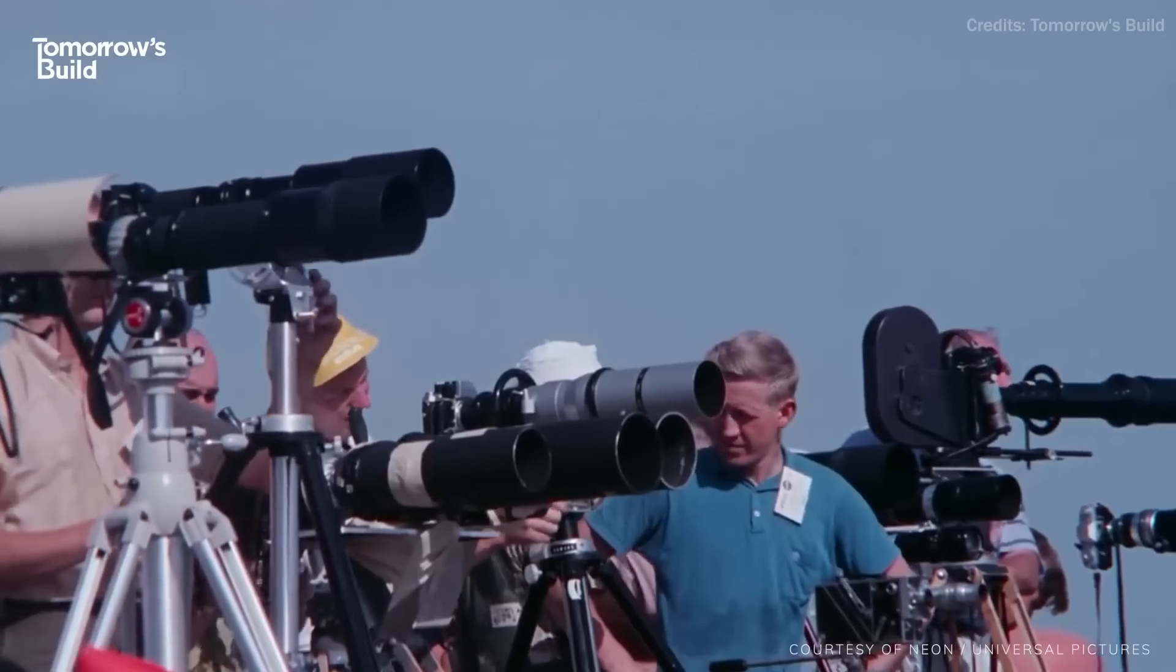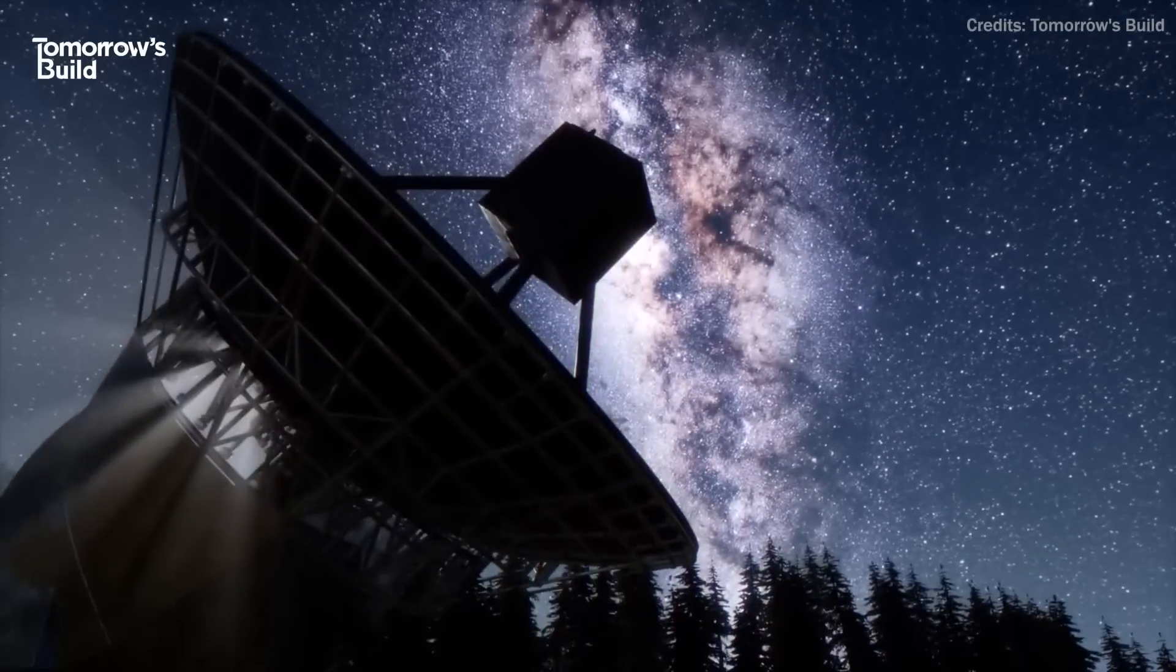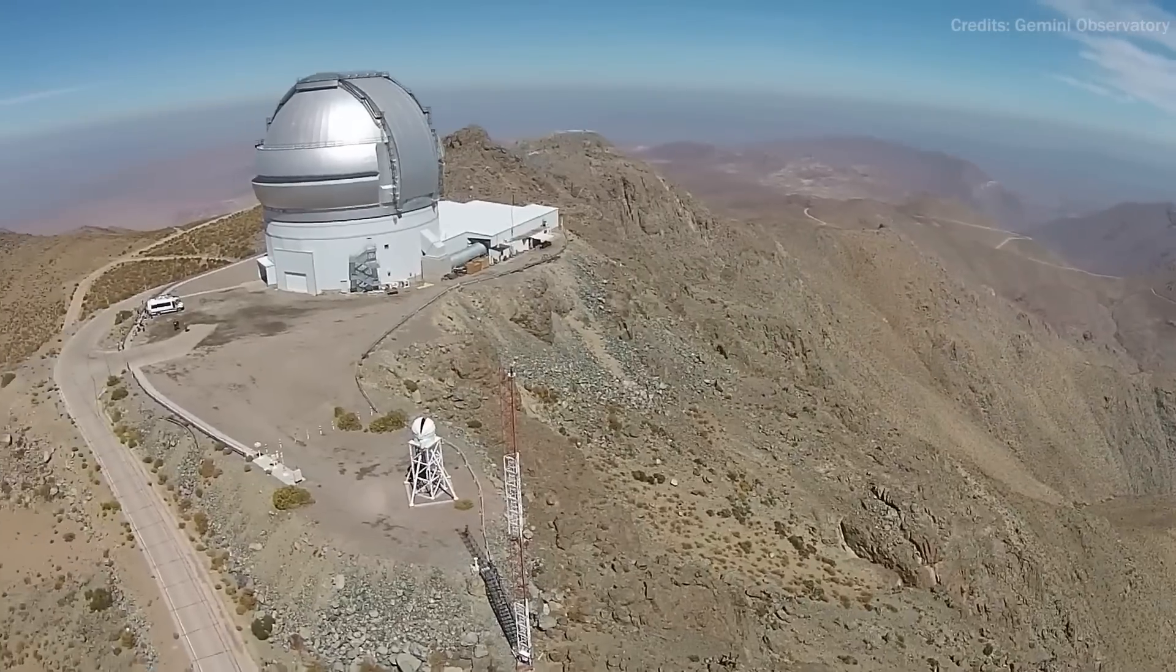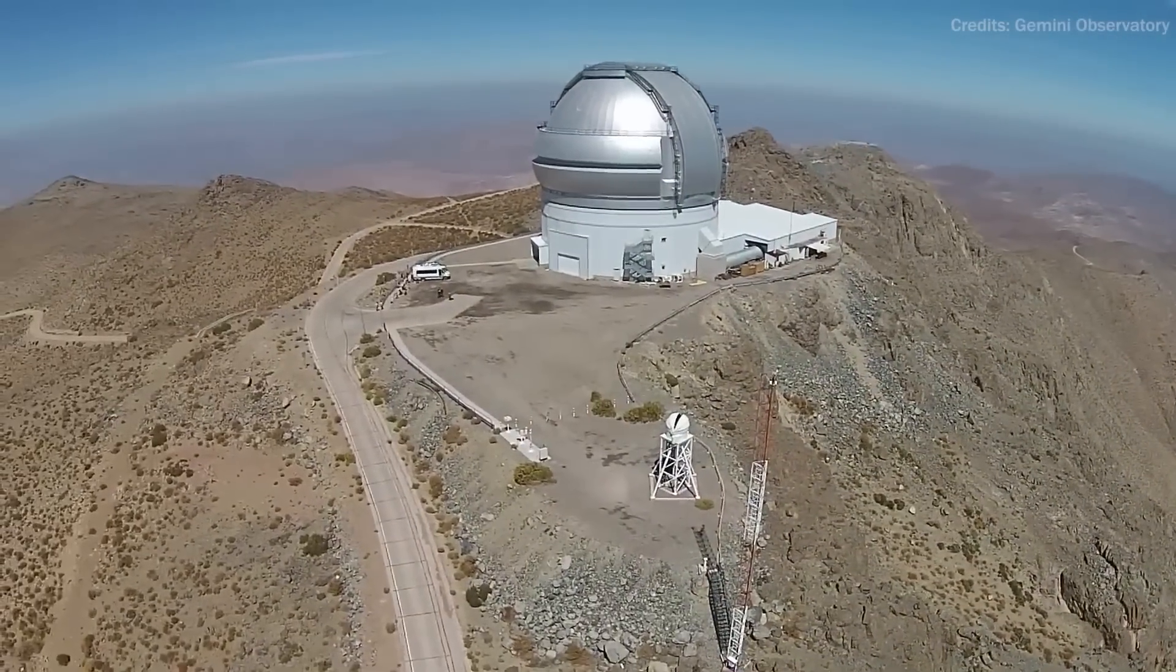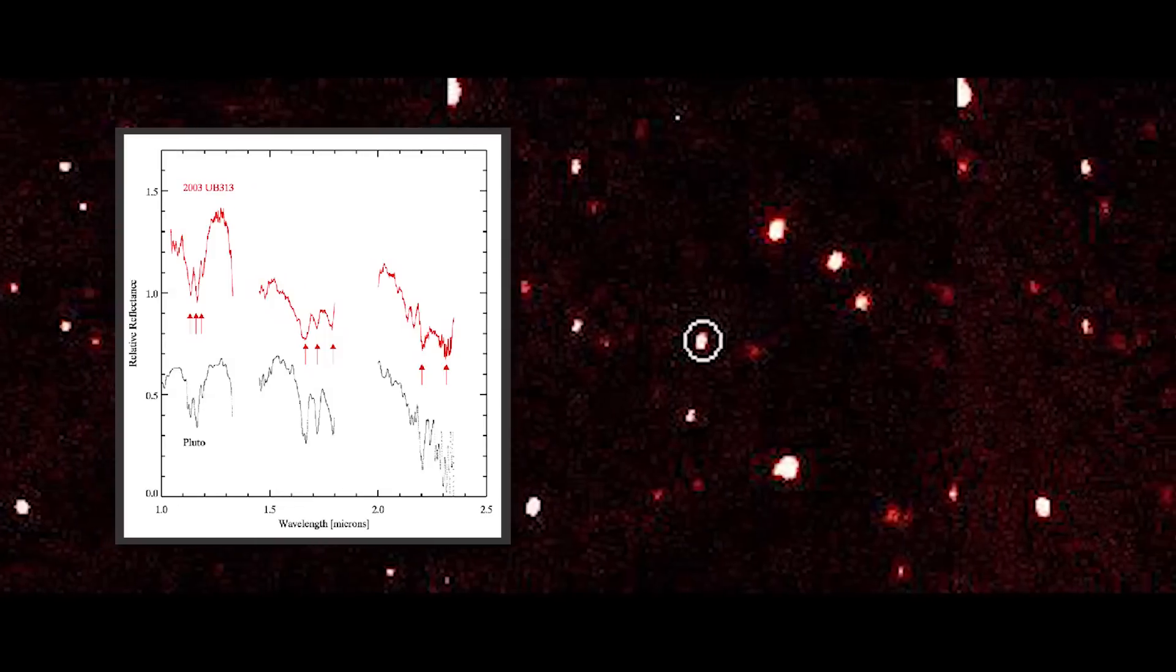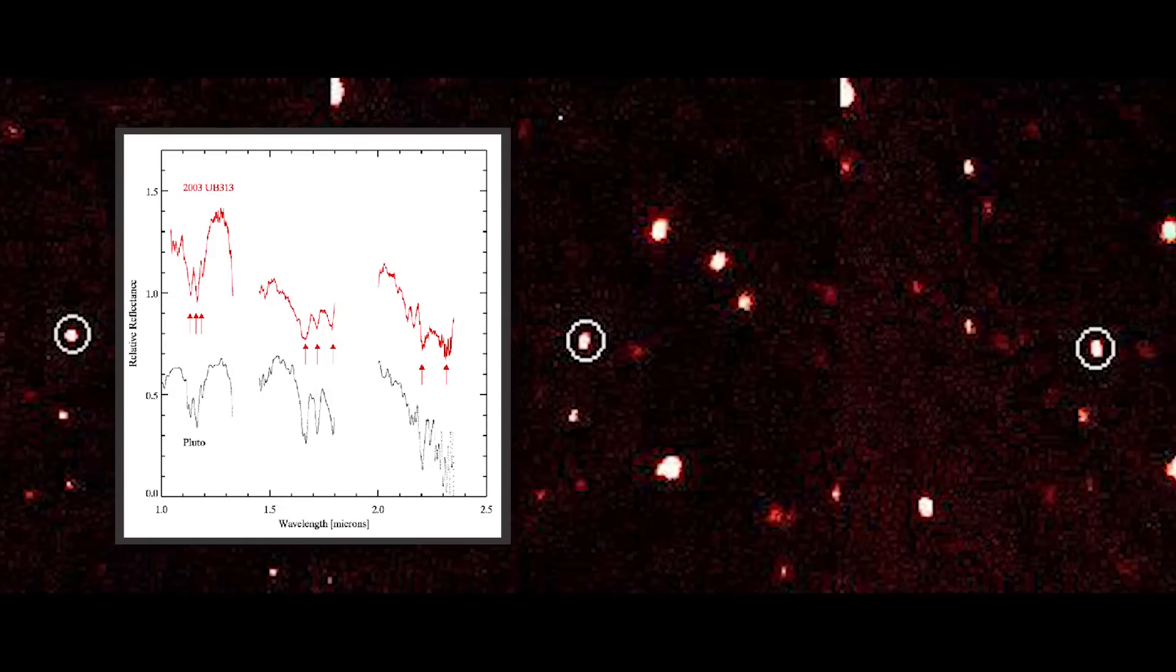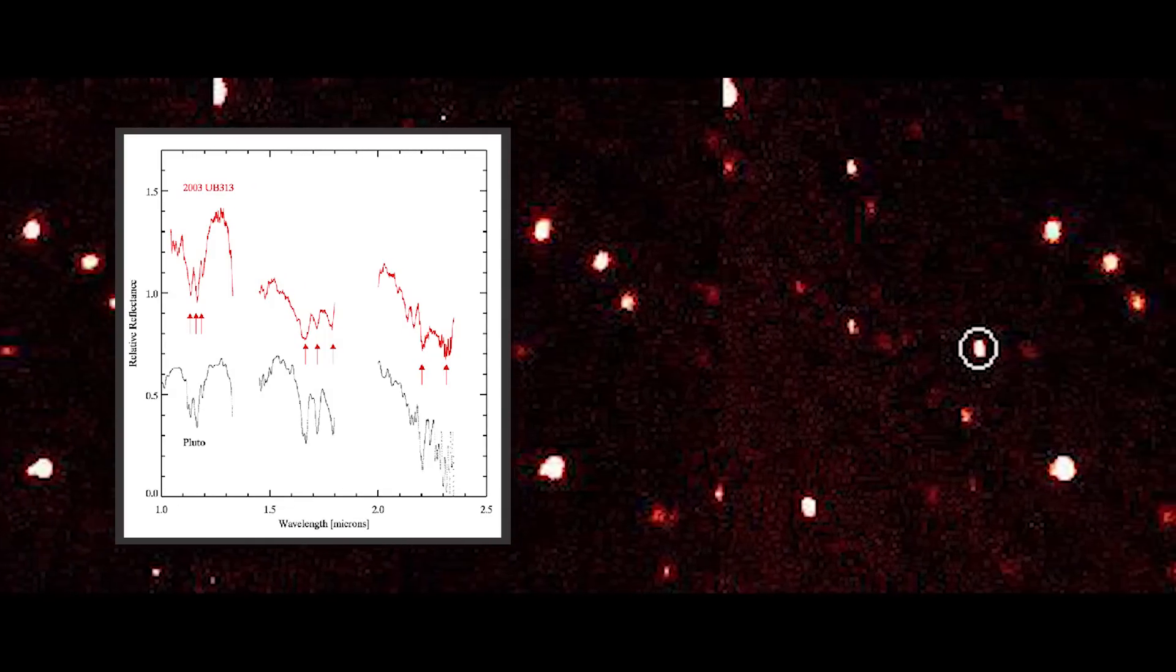Brown told reporters during a conference call that his team had been studying the new planet with as many telescopes as possible in preparation for the announcement. Trujillo then used the Gemini North Telescope on Mauna Kea Hawaii to obtain a near-infrared spectrum, which provides information about the planet's surface properties.